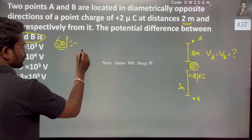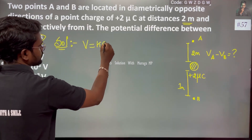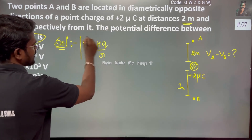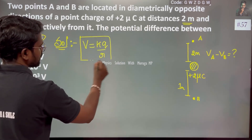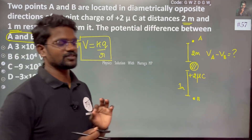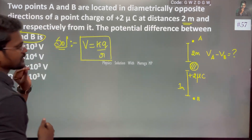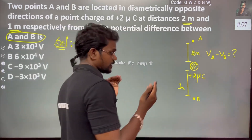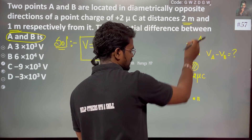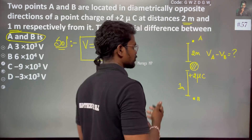The electric potential is given by V = kq/r. We have two points, each with a potential due to the one charge, so we know one potential for each point.